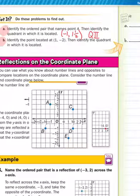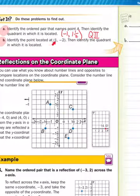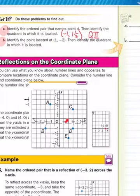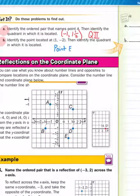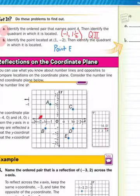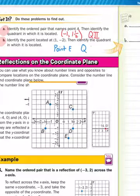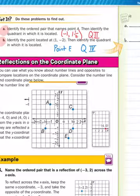All right, if you had that for A, good. If not, learn from your mistake as I do B. In B, it says identify the point located at 1, negative 2. So that means I go over to the positive 1 and down to the negative 2, which would be right there. So the point is going to be point E. Then it says identify the quadrant in which it is located. This is quadrant 1, quadrant 2, quadrant 3 — this is quadrant 4. So it's going to be Q Roman numeral 4, which looks like IV.